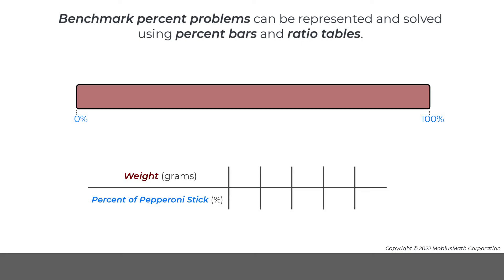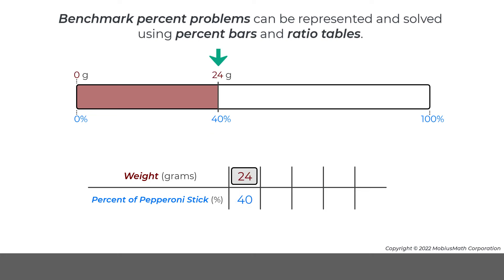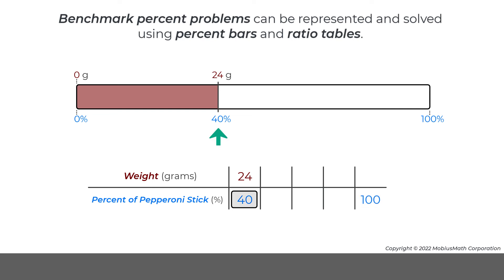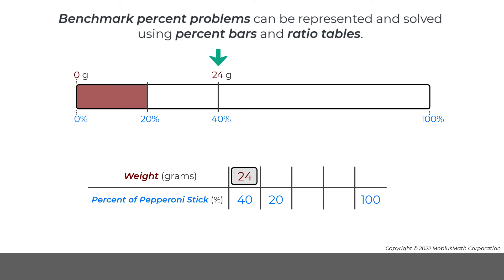In the second percent problem, 40% of a pepperoni stick weighs 24 grams. Benchmark percents can be applied to find the weight of the whole pepperoni stick or 100%. First, 40% can be halved to find 20%, so 24 grams can be halved to get 12 grams.